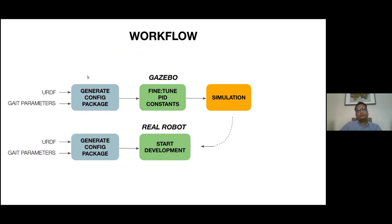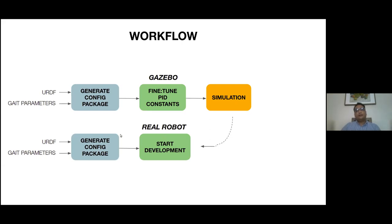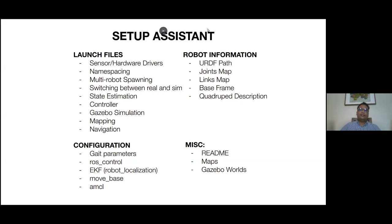The workflow when developing a robot with ROS and CHAMP: you start by generating your configuration package using the URDF file as input along with the desired parameters. URDF — Unified Robot Description Format — is the standardized way of defining the structure and positions of the actuators. Once you generate the configuration package, you can fine-tune the PID constants for your actuators and then proceed to simulation. For a real robot, the workflow is the same.